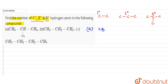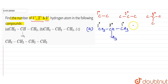In example A, the structure is CH₃-CH-CH₃ with another CH₃ group, so the central carbon is attached to 3 carbons — making it a 3-degree carbon — and the three CH₃ groups are 1-degree carbons. Therefore, the number of 1-degree hydrogens is 3+3+3 = 9, the number of 2-degree hydrogens is 0, and the number of 3-degree hydrogens is 1.